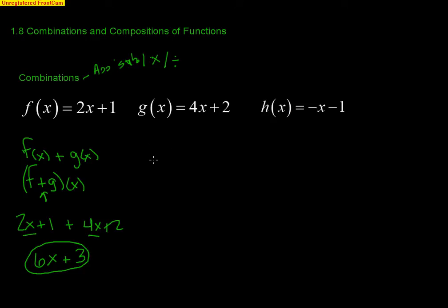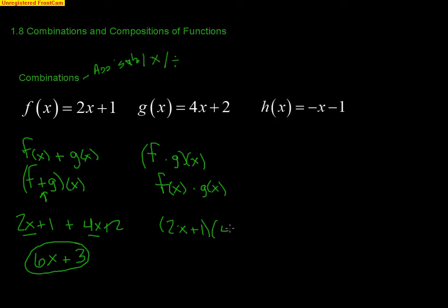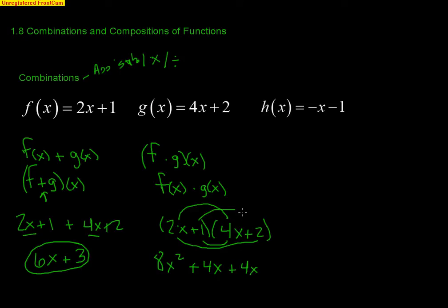You can do any operation. If we do f times g of x, that tells us to take f(x) and multiply it by g(x). So f times g gives us (2x+1)(4x+2), and we FOIL: 2x times 4x is 8x², 2x times 2 is 4x, 1 times 4x is another 4x, and 1 times 2 is 2. Combining like terms gives us 8x²+8x+2.